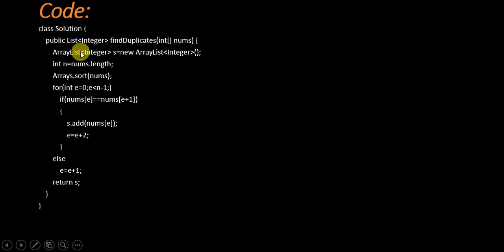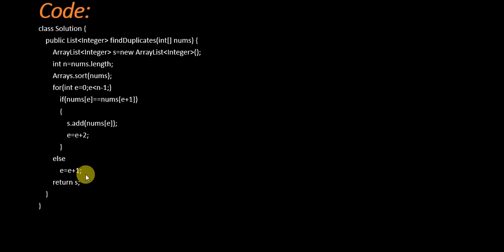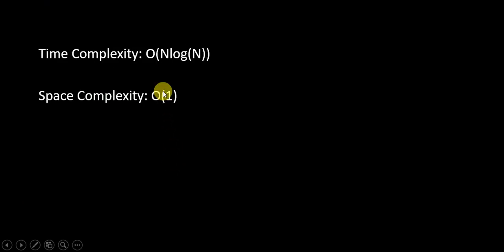Now we will see the code. First we implement our array list, then find the length of the array, then sort it. We iterate the loop from 0 to n-1: if the element at index i equals the element at index i plus 1, we add it to the array list and increment by 2; otherwise we increment by 1. Finally we return the array list. Time complexity is O(n log n) and space complexity is O(1).